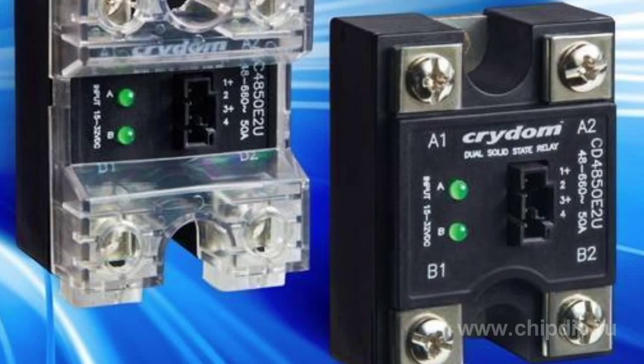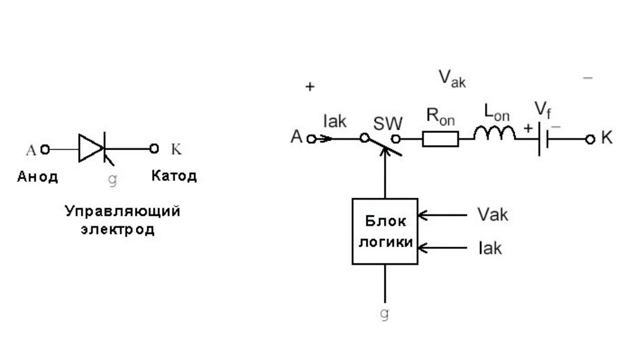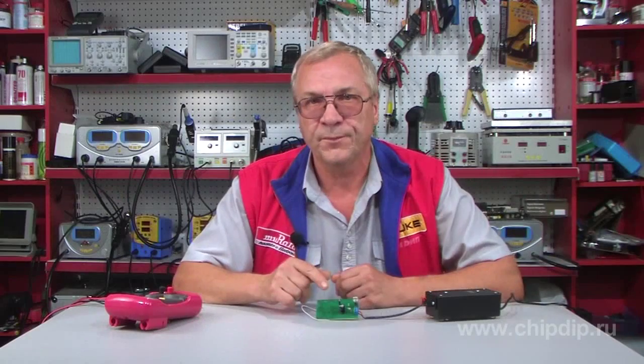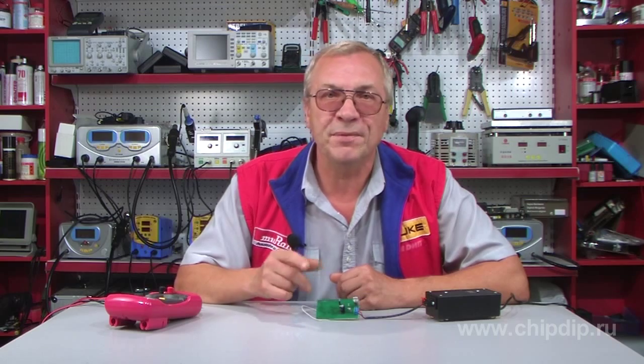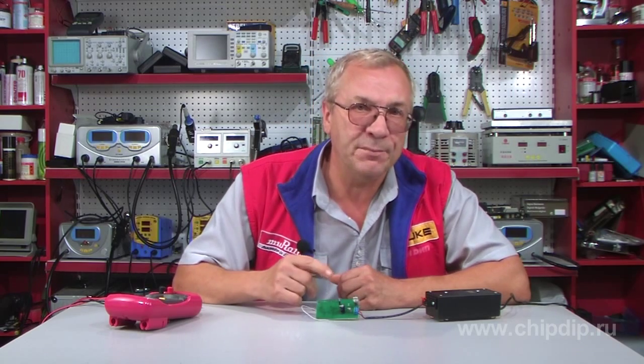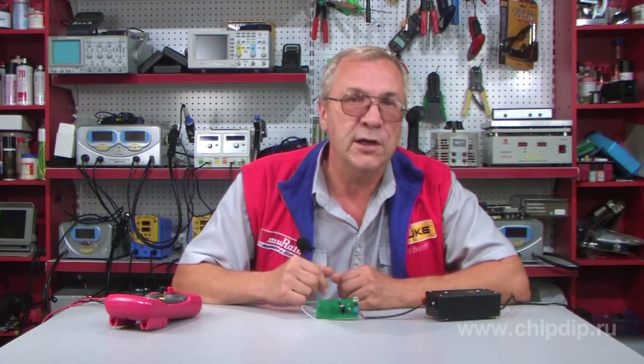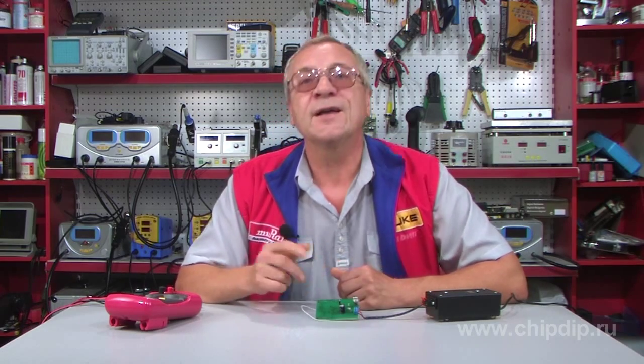Unlike transistors, thyristors have two stable states: the on state, while the thyristor resistance is minimal, and the off state, while the thyristor resistance is maximum. To turn the thyristor on, it is enough to supply a control voltage to its gate briefly. To turn the thyristor off, one can power off the thyristor for a short time, change the supply voltage polarity, or decrease the load current below the thyristor holding current.